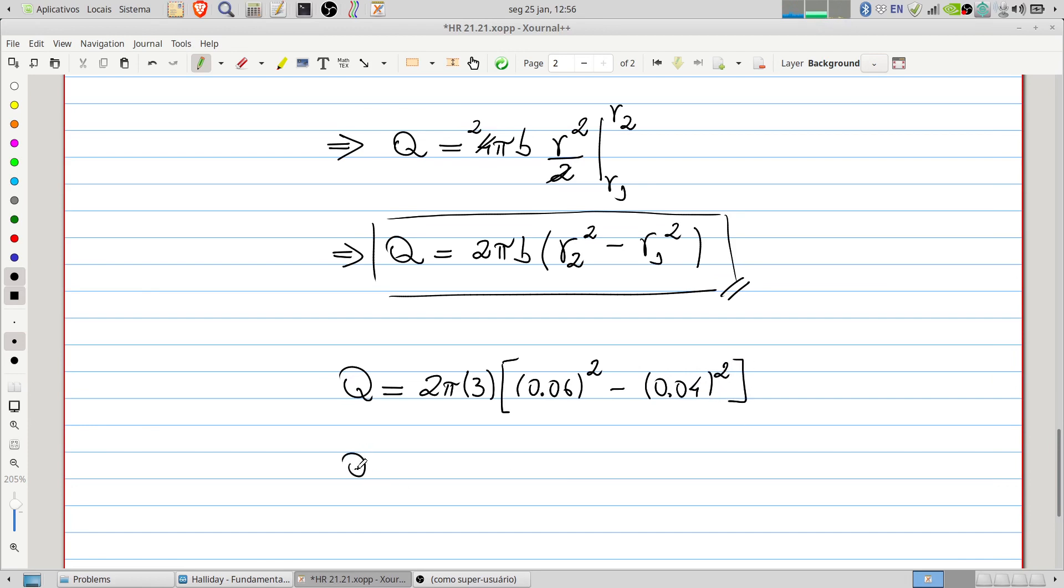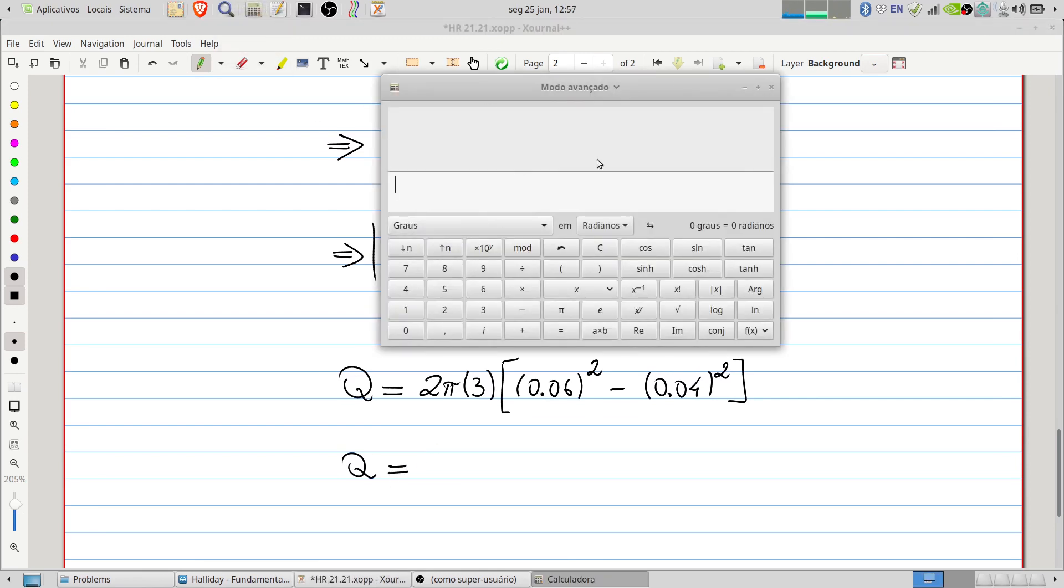Therefore, our net charge will be 2 times π times 3 times 0.06 squared minus 0.04, also squared.